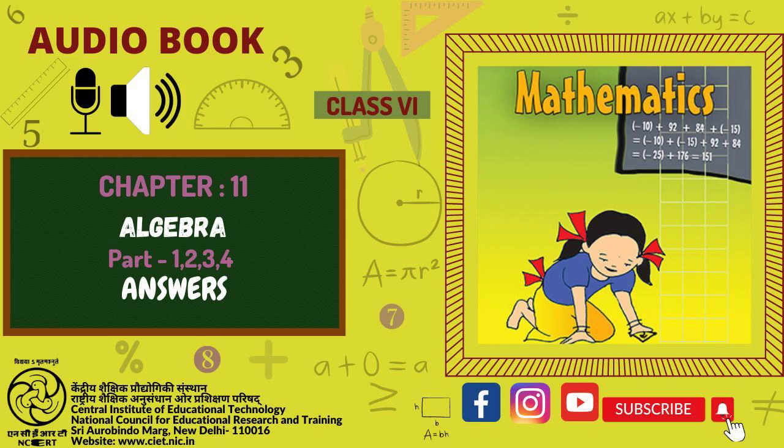11. A. 3X plus 1, 1. X is equal to number of squares. B. 2X plus 1. X is equal to number of triangles.